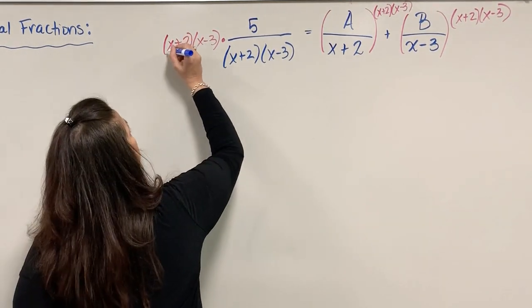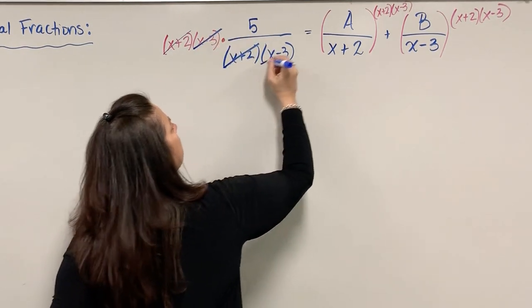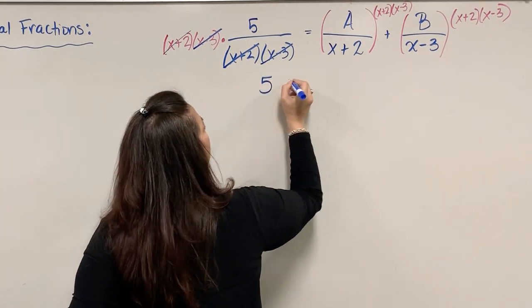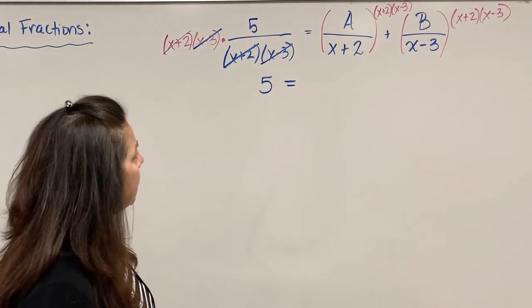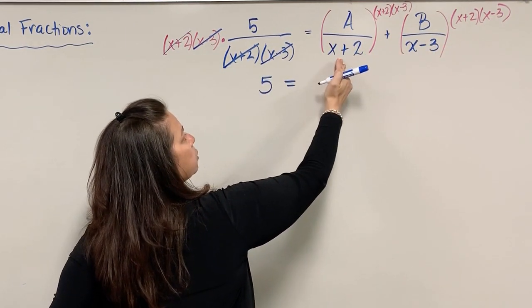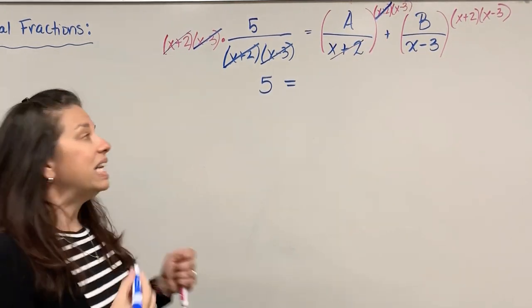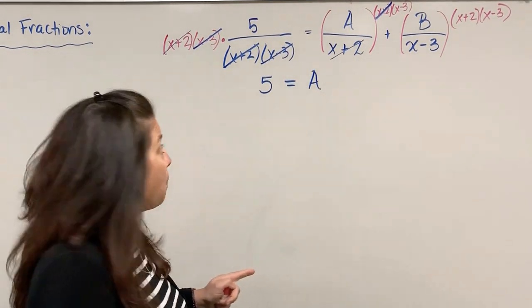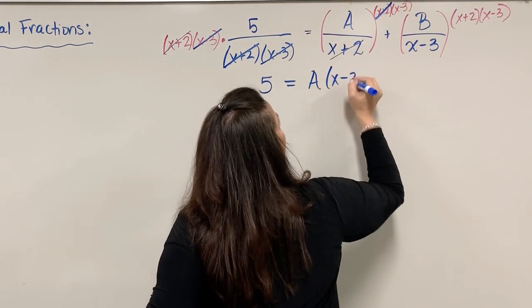I'm going to multiply both sides of my equation by this denominator, (x+2)(x-3). By doing so, that allows me to simplify and hopefully some things divide out. I have x+2 divides out here with this x+2, x-3 divides out here with this x-3.